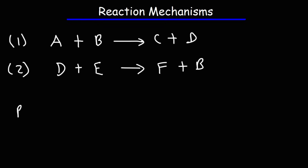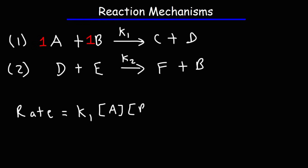If we want to write the rate law expression for the first step of this reaction mechanism, notice the coefficients of A and B — it's 1 to 1. We're going to call the rate constant associated with the first step K1, and the rate constant for the second step K2. So the rate is equal to K1 times the concentration of A times the concentration of B. That's the rate law expression for the first step.